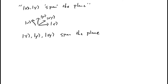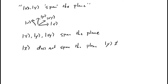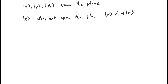An example of a set of vectors that doesn't span the plane would be just the single vector x, because the vector y is in the plane but there's no way to express y as a linear combination of just the vector x. Alright, so that wraps up span.